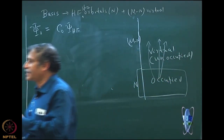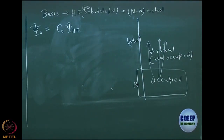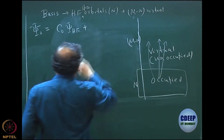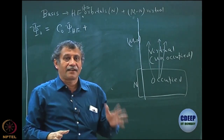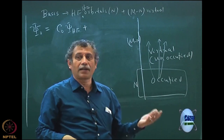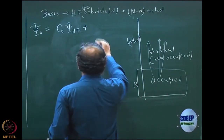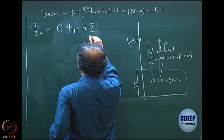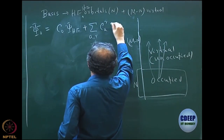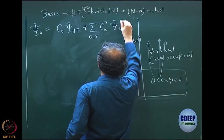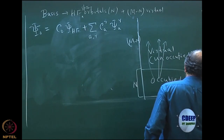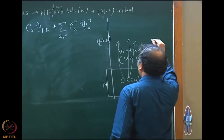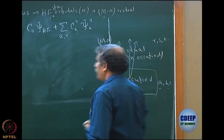I can have single excitations, double excitations, triple excitations, and so on. The actual wave function is then a linear combination, and all the mCn determinants can be categorized as Hartree-Fock plus all singly excited plus all doubly excited and so on. I can write this as: sum over a, r of cₐᵣ ψₐᵣ — where we use a, b, c etc. for occupied orbitals and r, s, t etc. for virtual orbitals. So ψₐᵣ is a determinant generated from Hartree-Fock by changing spin orbital a to r.